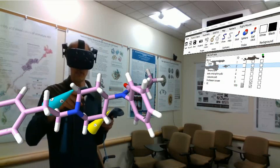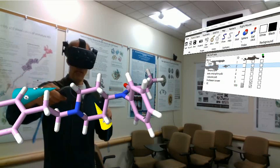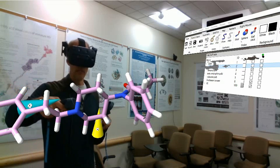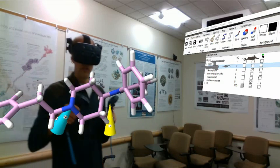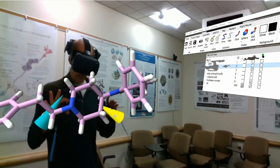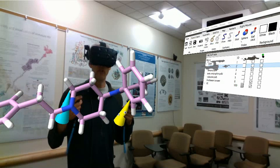And carfentanil, for instance, which is just different in a small number of atoms, is 10,000 times as potent as morphine. So those are two examples of drugs.